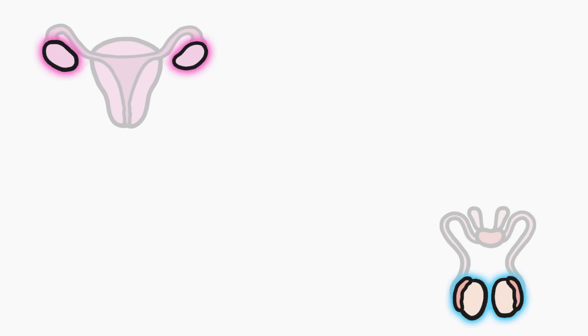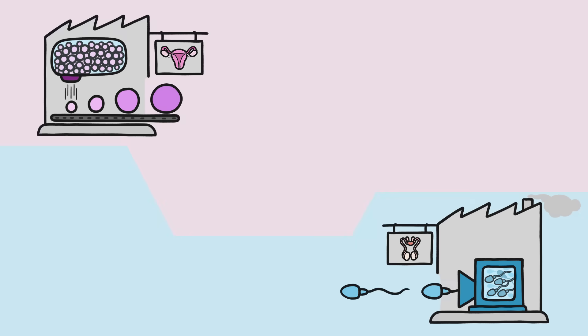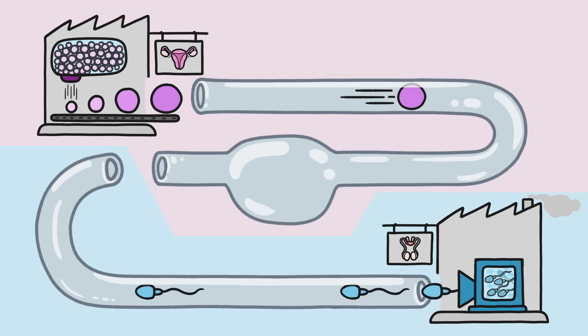You can think of the ovaries and testicles as little factories that produce eggs and sperm. The egg and the sperm can travel from their factories, meet up, and then implant into a cozy bed of tissue. That's how pregnancy begins.